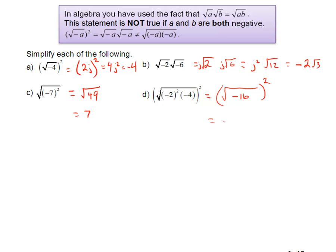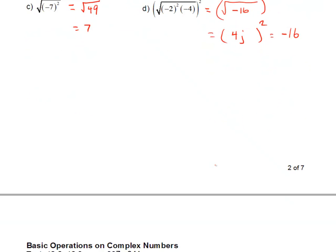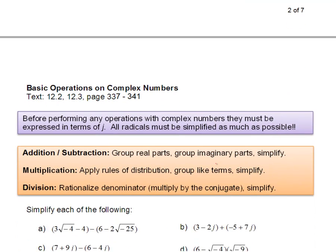Negative 16 under a root means 4i, or j, all squared, which means negative 16, j squared is negative 1, there's the negative, 4 squared is 16, so there's 16. Those are some more examples of simplifying the roots with the negatives.